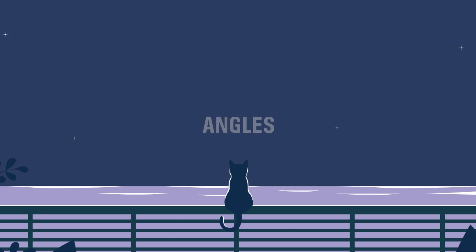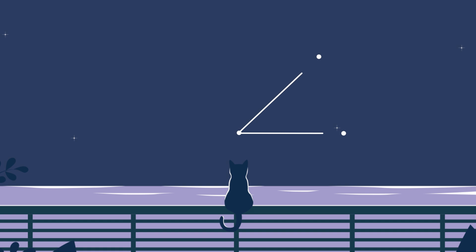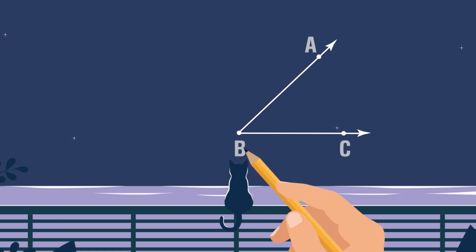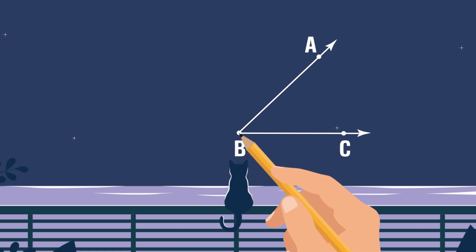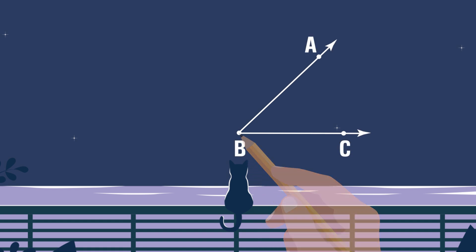Now let's look at angles. An angle is formed by two rays, or two line segments, that share an endpoint. The shared endpoint is called the vertex.